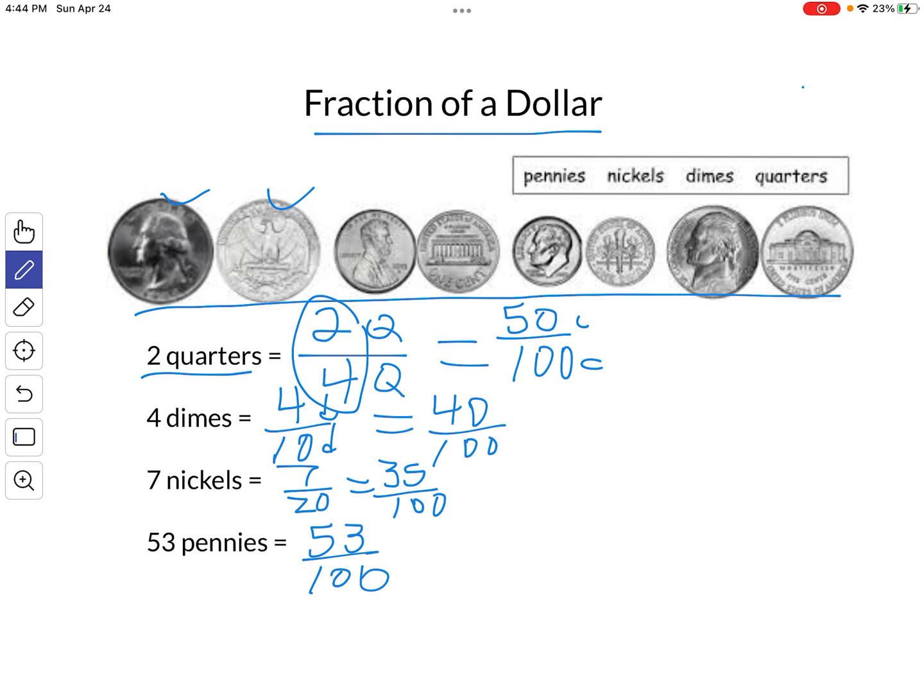The trick here is that you have to use the same thing on the numerator and the denominator of the fraction. If you're going to use coins up here, you have to put coins down here. If you're going to use cents as the numerator, you have to have cents as the denominator when you're finding fraction.